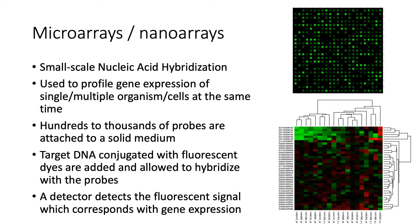Microarrays use hundreds to thousands of probes attached to a solid medium. Target DNA conjugated with fluorescent dyes is added and allowed to hybridize with the probes. The excess DNA is washed off, and the detector detects the fluorescent signal, which corresponds with gene expression. On the right side, you can see two examples of microarrays. The top example shows dots with varying intensities of green, where intensity corresponds to the level of gene expression. The bottom example shows two colors — red and green — at varying intensities, where each color corresponds to a different cell line or species, and intensity again corresponds to gene expression.